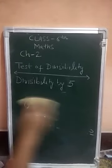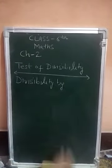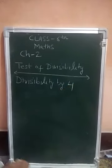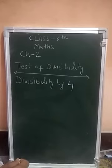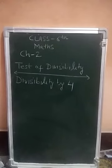Now divisibility by 4. A number is divisible by 4 if the number formed by its digits at the 10's place and 1's place is divisible by 4. In other words, if the last two digits together form a number that is divisible by 4, then the whole number is divisible by 4.